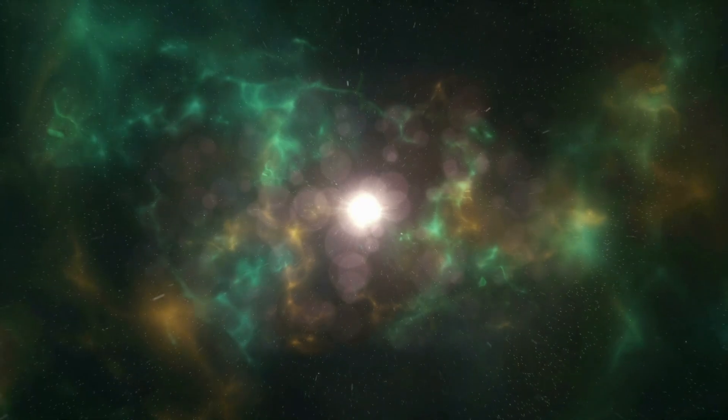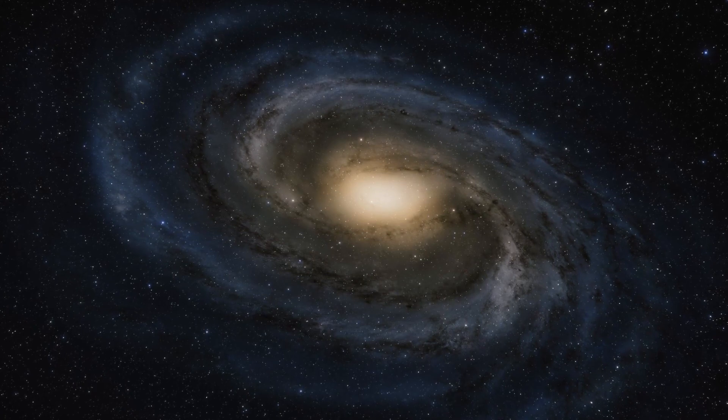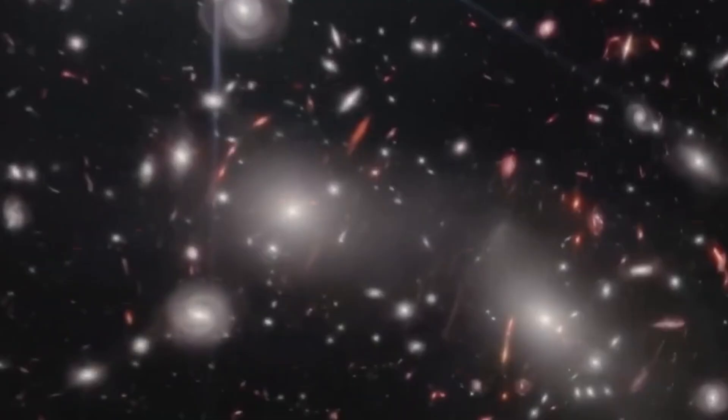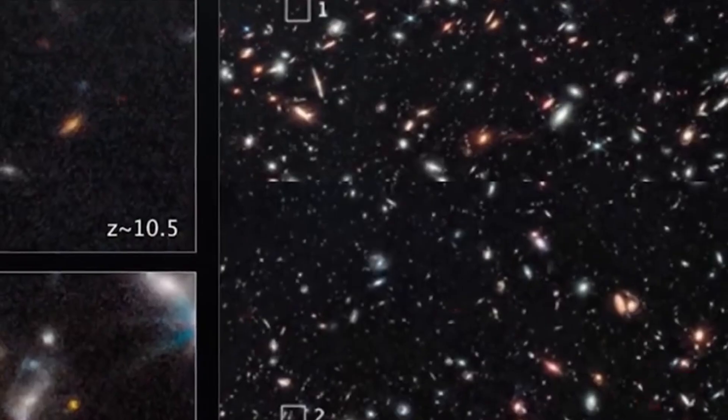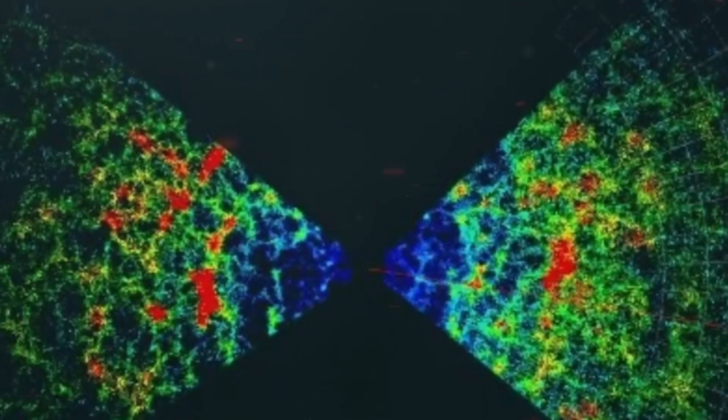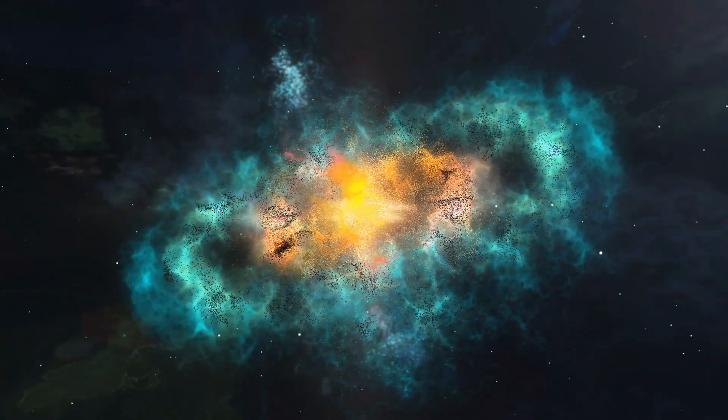They're also gigantic, containing almost as many stars as the modern-day Milky Way galaxy. It's bananas, said Erica Nelson, co-author of the new research and assistant professor of astrophysics at the University of Colorado Boulder. You just don't expect the early universe to be able to organize itself that quickly. These galaxies should not have had time to form.